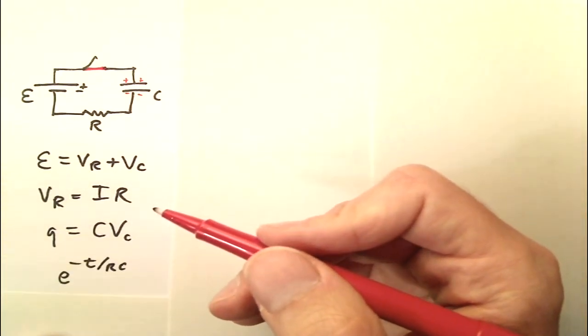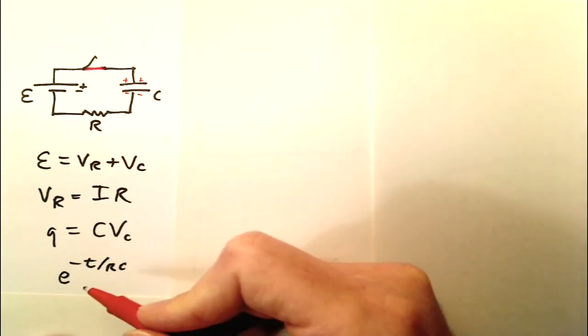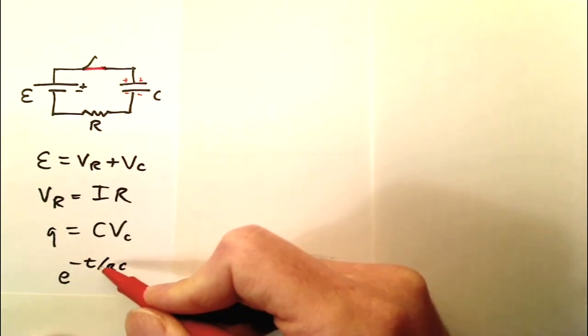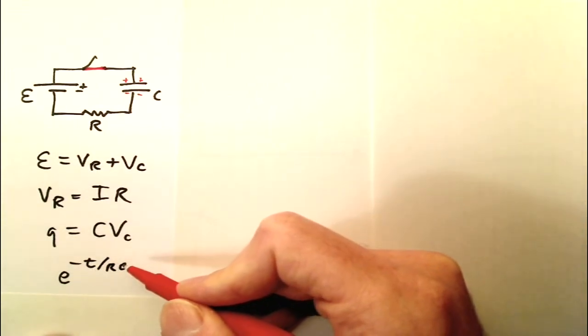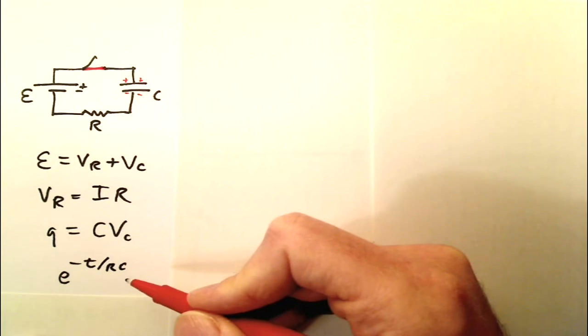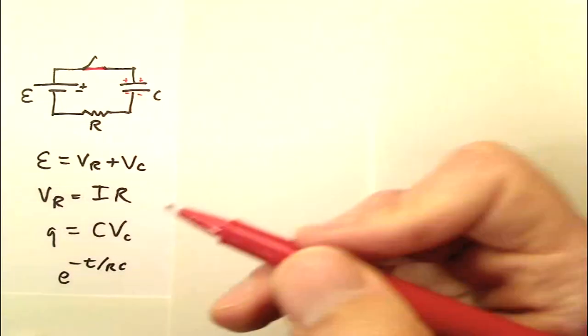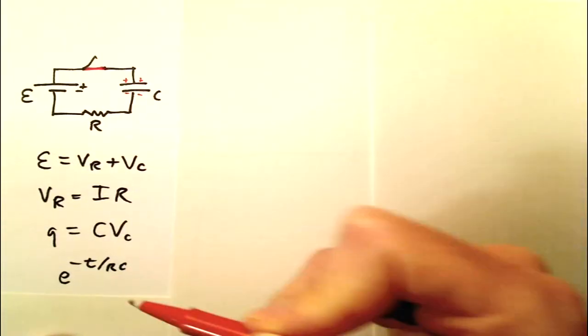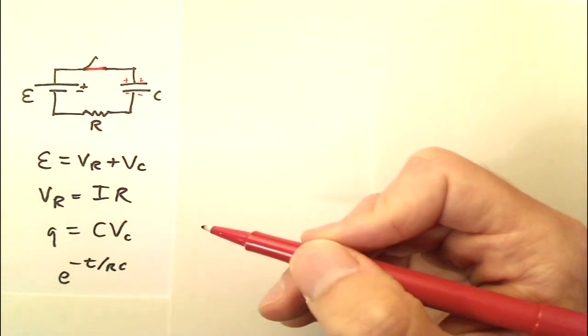But the one new thing that you will need to remember is this expression right here: e to the power of negative t over RC. This expression is going to appear in every single one of the formulas that I'm going to write for the various aspects of this circuit, and that's the one new thing that you definitely need to remember.